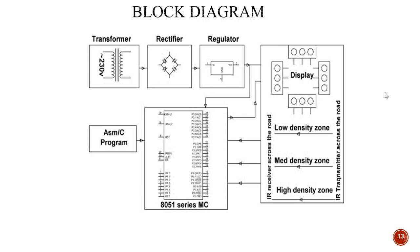This is the block diagram for the density-based traffic light control system. It has three units: the display unit with three LED lights per road (red, green, and orange) across four junction roads; the detector unit using IR sensors to detect whether traffic is low, medium, or high density; and the microcontroller-based controller unit that automatically controls the LEDs based on the IR sensor input. This density-based system overcomes the major drawbacks of the normal traffic light control system.